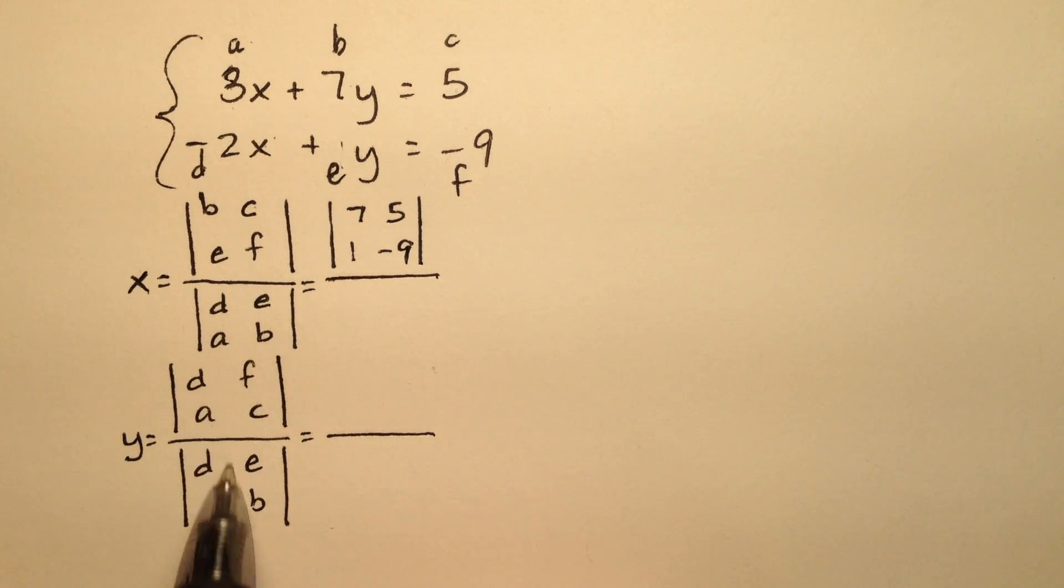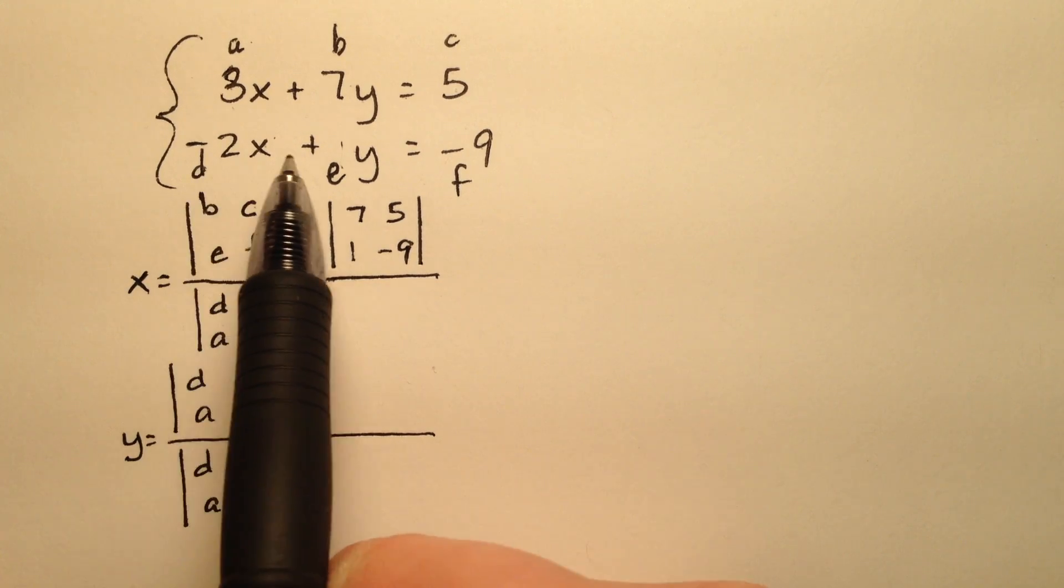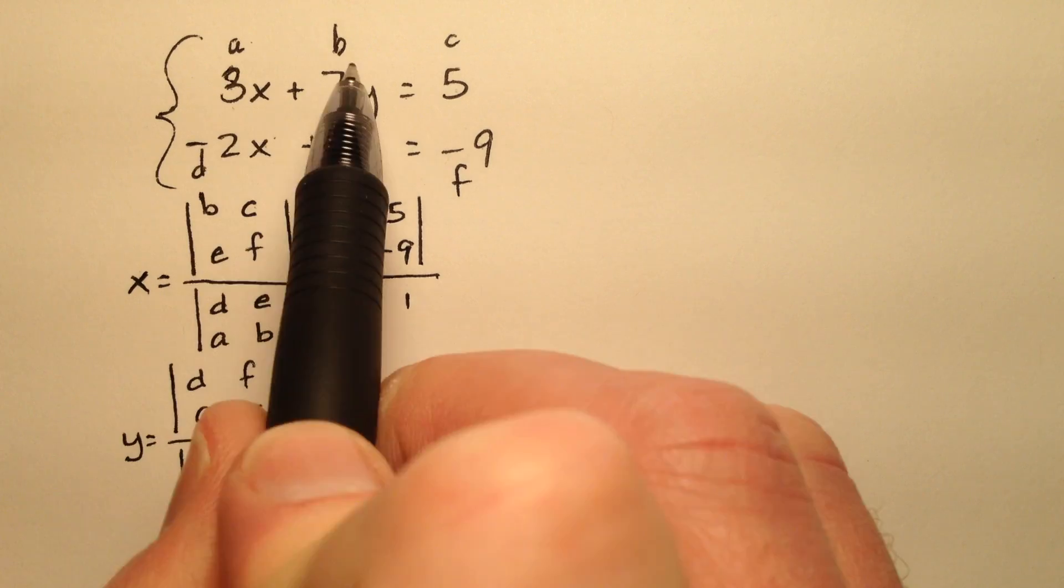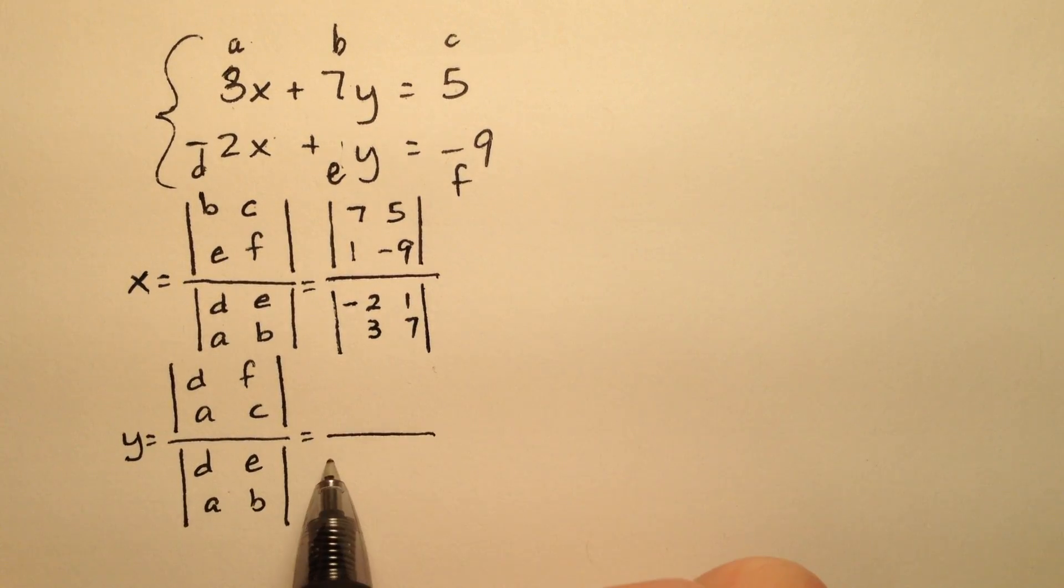Okay, so the denominator, which you'll notice the denominators are the same. D, E, A, B, so D, E. So negative 2, 1, A, B, 3, and 7. So I'm going to go ahead and copy that down here because they're the same.